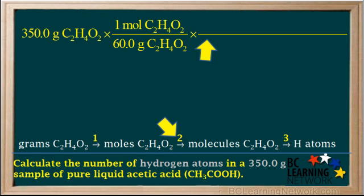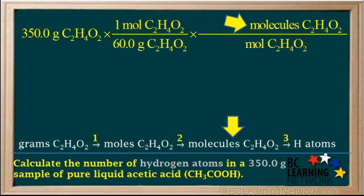In step two, we convert moles of acetic acid into molecules, so we set up another conversion factor. The unit we need to cancel is the moles, so we write it on the bottom. The unit we want is molecules, so we write that on the top. We write a 1 by the mole, and the number of molecules in one mole of any substance is 6.02 times 10 to the 23rd. So we write that by the molecules.